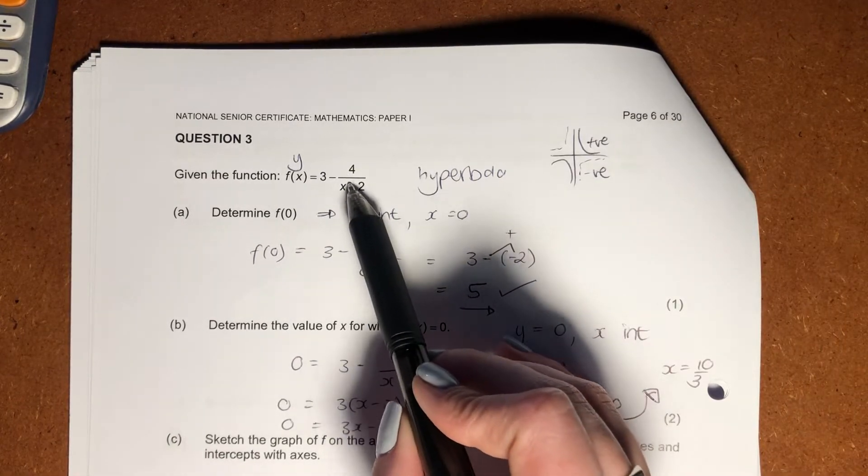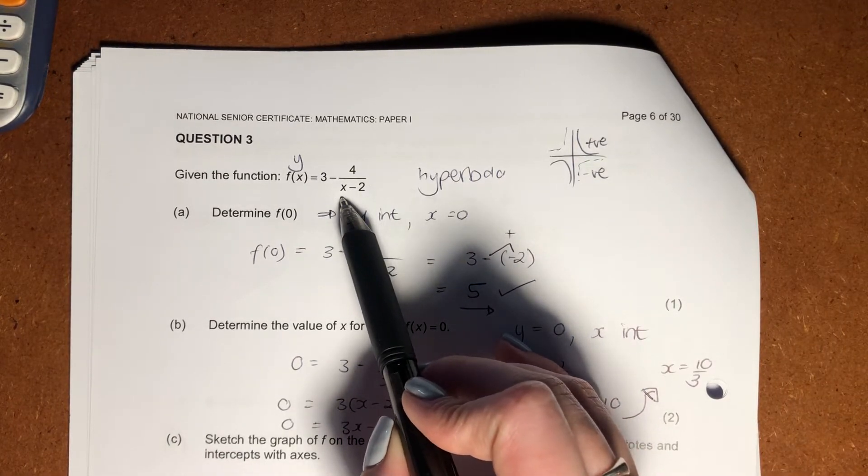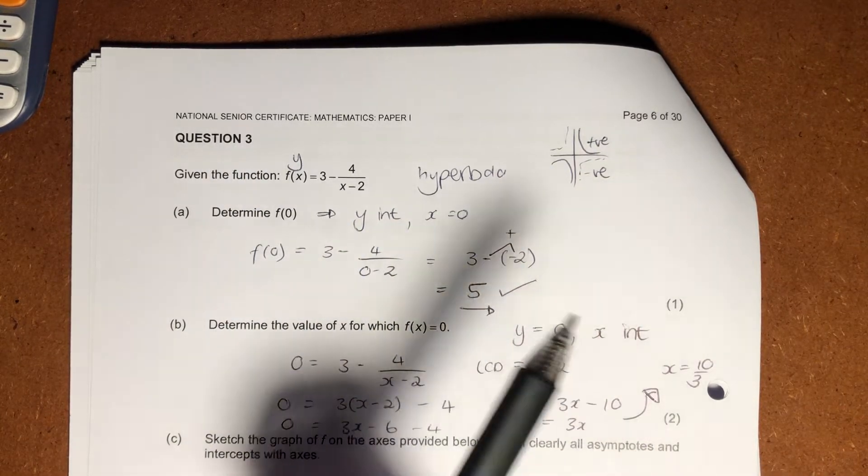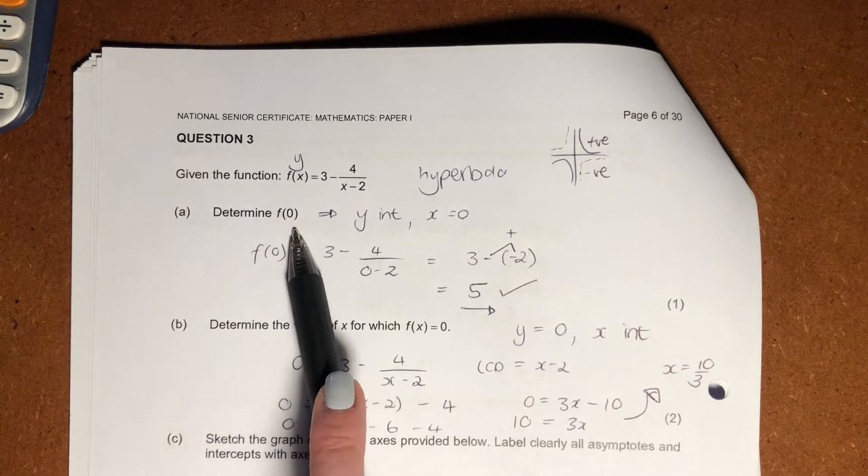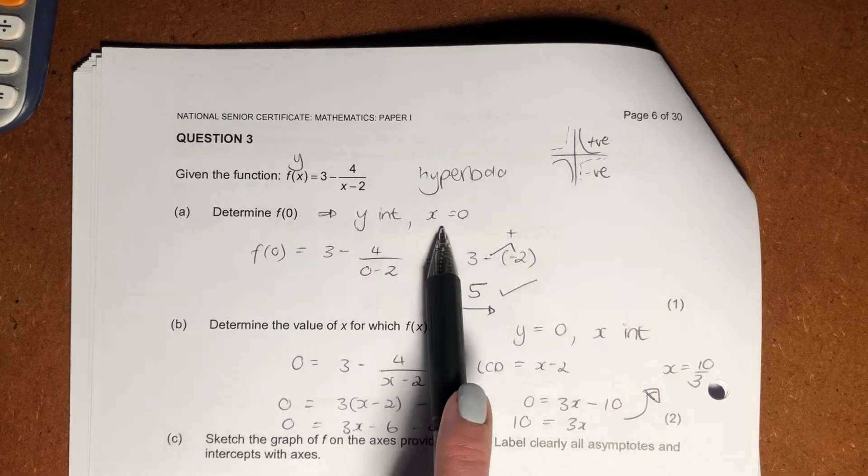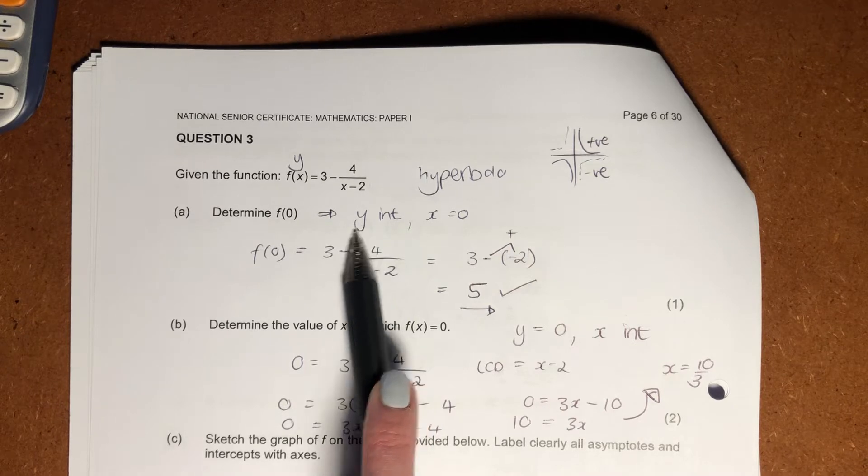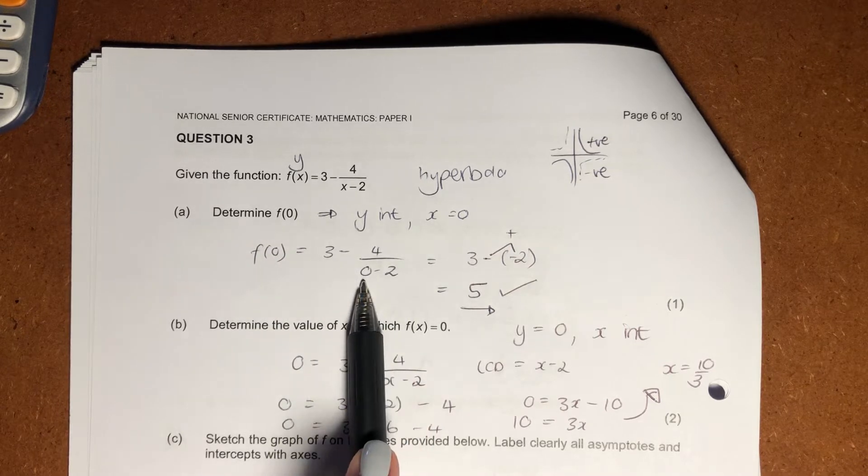The characteristic of a hyperbola is with an x in the denominator, so if you see that, you should be thinking hyperbola. Here, for our first question, it says determine f of 0. f of 0 is effectively saying where x equals 0, which we actually know is our y-intercept. So go plug 0 into your function.